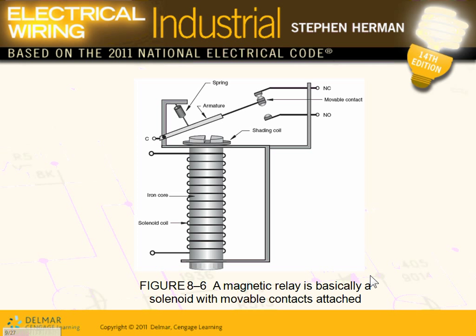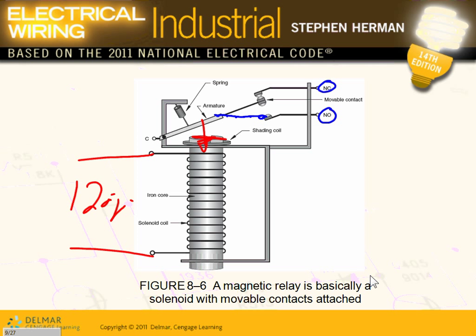Magnetic relays or magnetic starters: you bring a voltage — 120 volts — create a magnetic force that physically and mechanically pushes these contacts. When you grab this contact, this is normally closed and this is normally open. What happens when you energize it? The contact will change position — from normally closed to normally open.